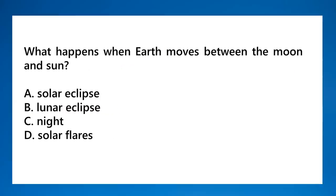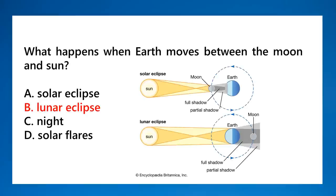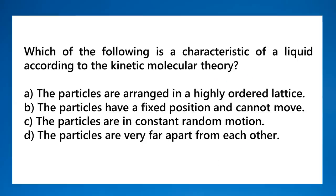What happens when Earth moves between the moon and the sun? With Earth in the middle, that is a lunar eclipse. When the Moon is in the middle, that is a solar eclipse.